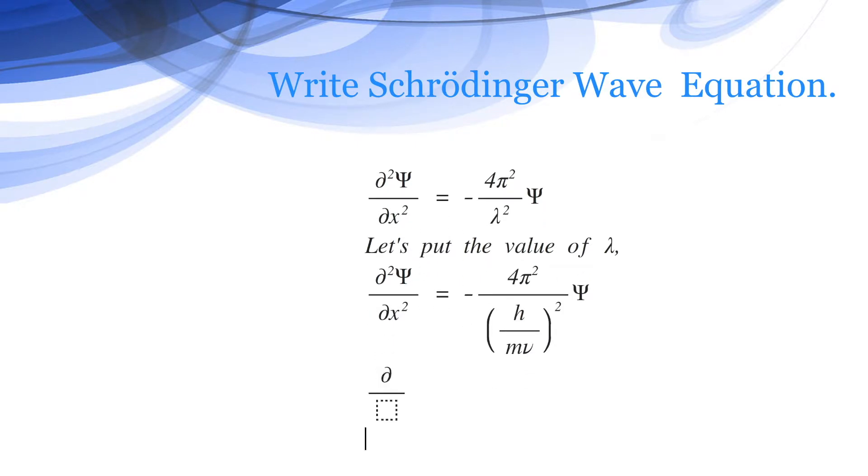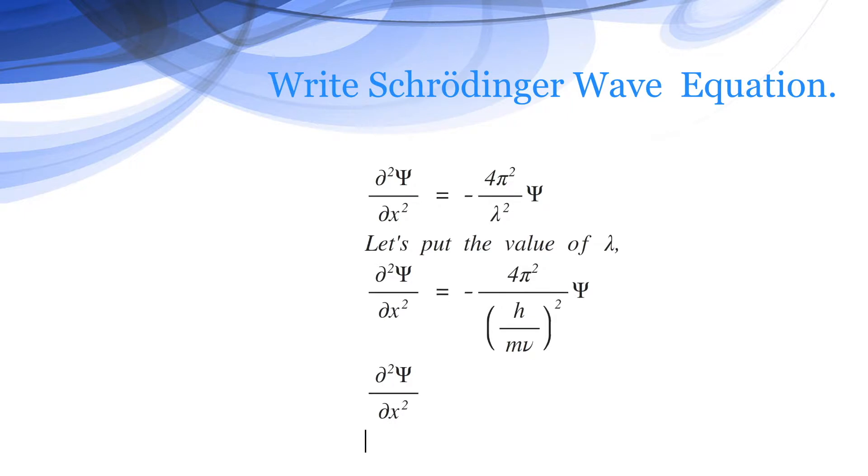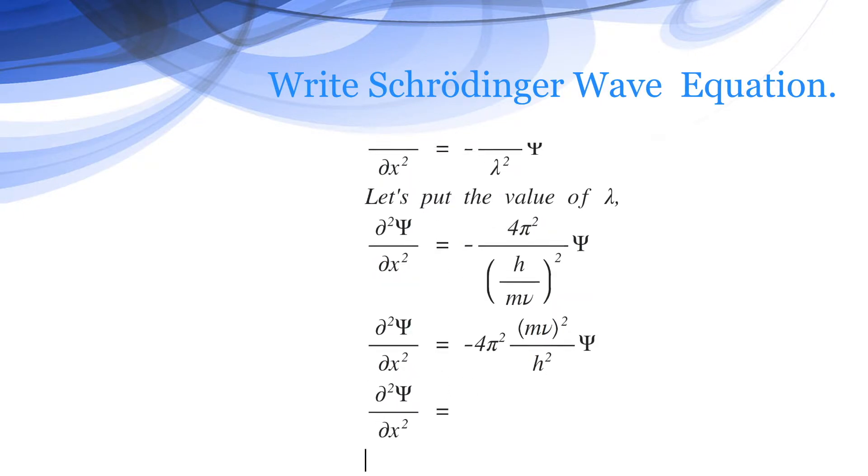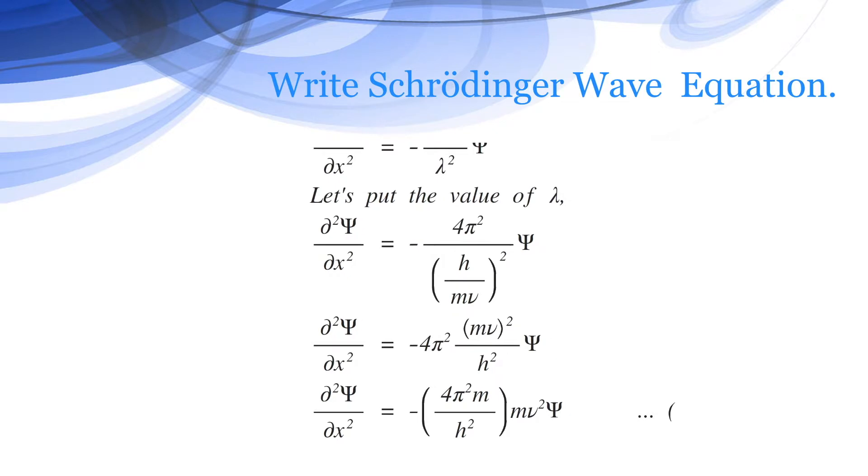Let's simplify this equation. So d square psi by dx square equals minus 4 pi square mv the whole square divided by h square into psi. Or we can write d square psi by dx square equals minus 4 pi square m by h square into mv square psi. This is equation number one.